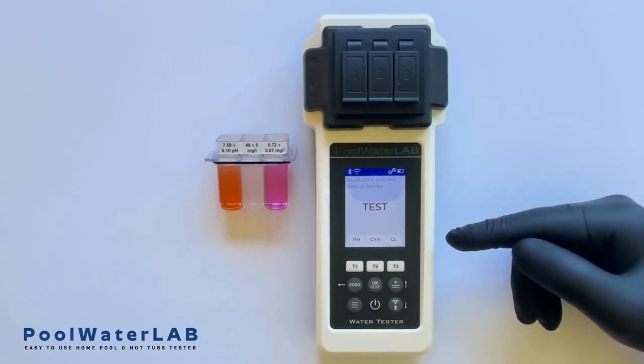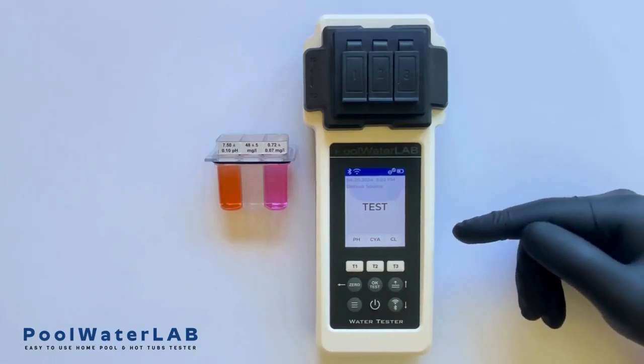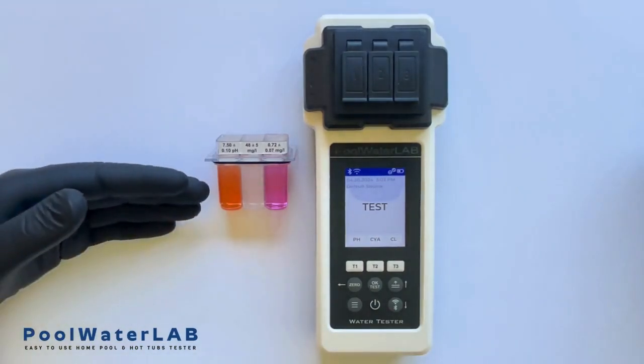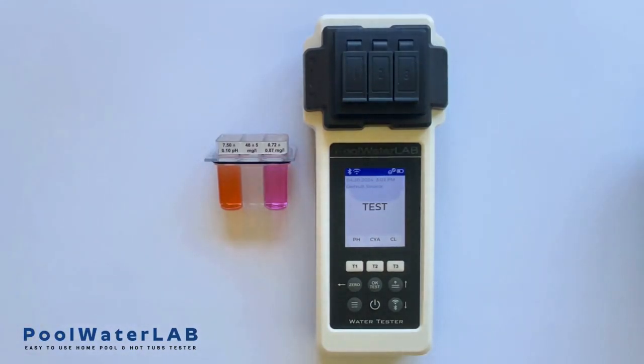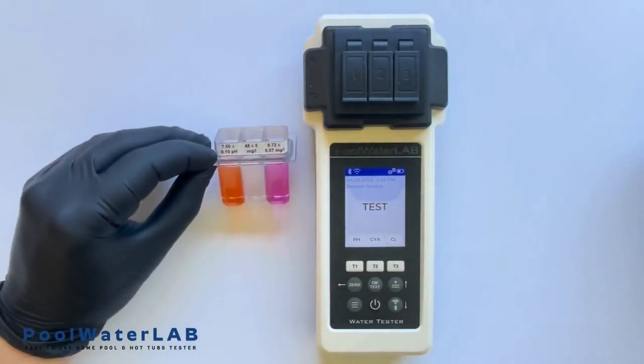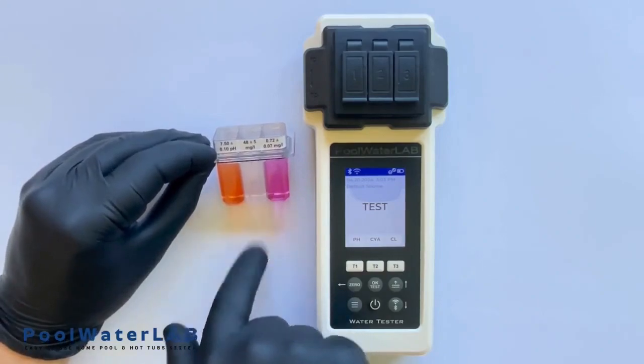If you want to accurately assess the precision of any device, you should first order the necessary sample tests from a laboratory and only then evaluate these samples for accuracy. In our case, we have samples that have been produced and verified under laboratory conditions. Specifically, these include pH, CYA, and free chlorine levels.